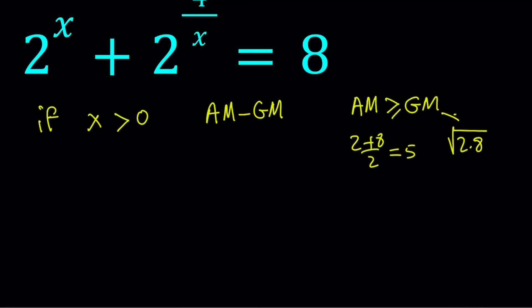2 plus 8 divided by 2 is 5, and the square root of 2 times 8, which is the geometric mean, is going to be 4. And as you can see here, 5 is greater than or equal to 4. This is not a proof. I'm just giving you an example, but that's how it works.